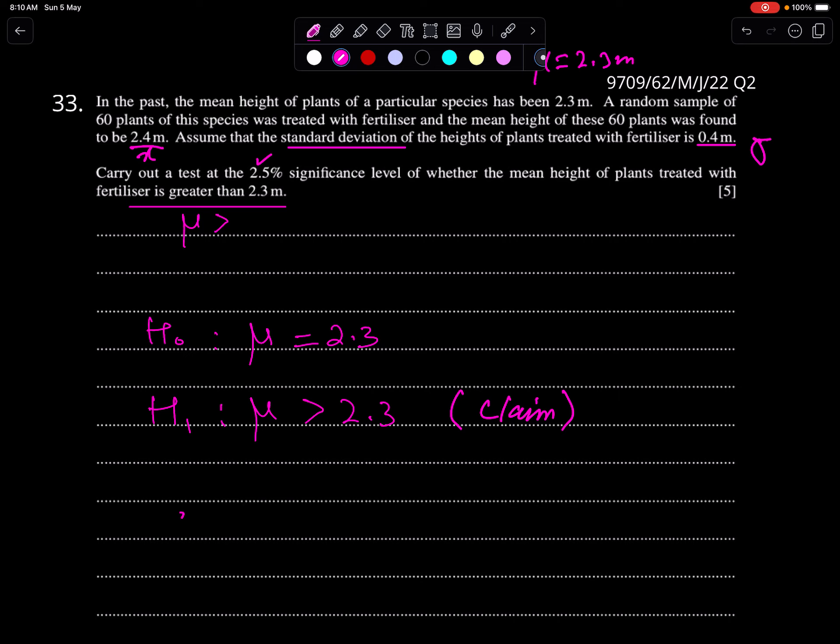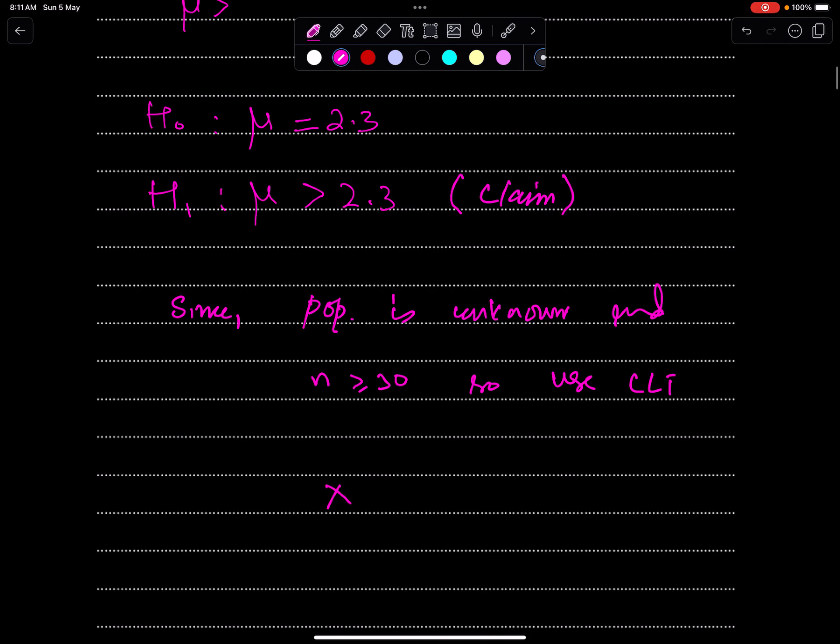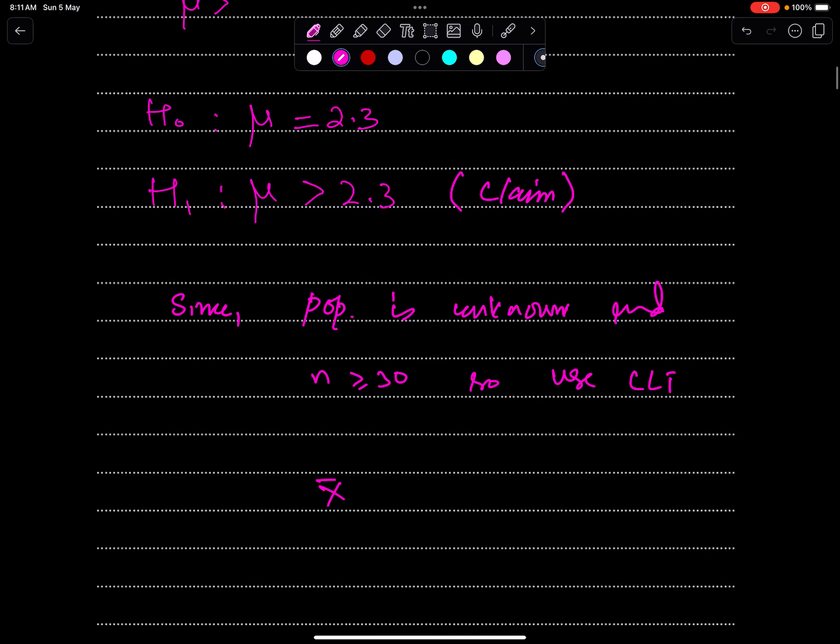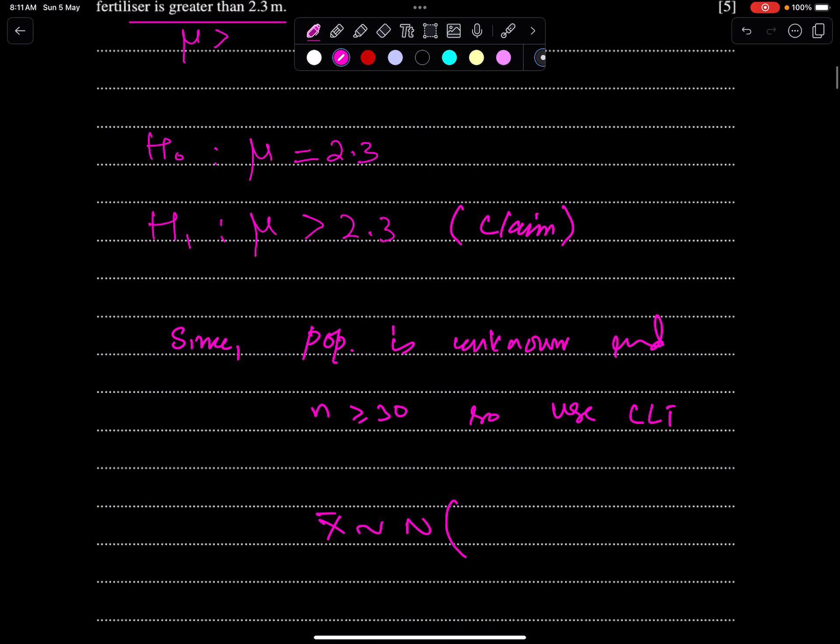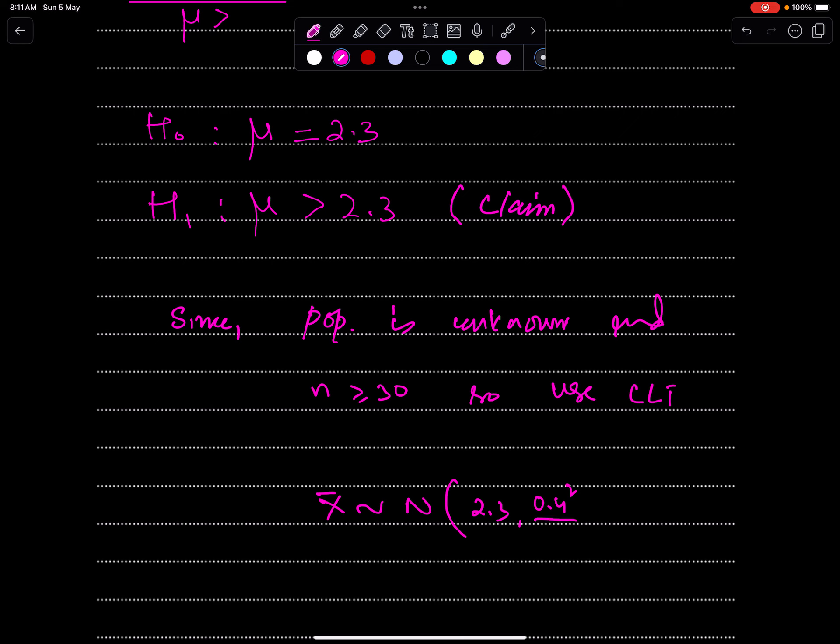By the way, since population is unknown and n is large, use CLT - central limit theorem. According to CLT, X bar is approximately normal with mean 2.3 and sigma is 0.4 squared divided by n, which is 60.